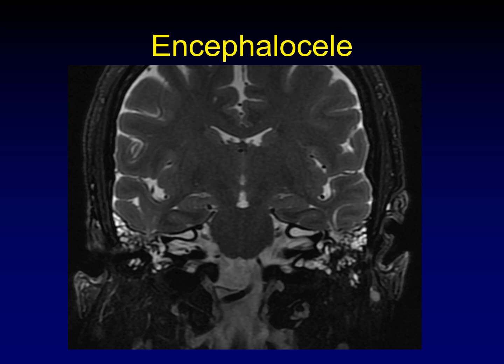For looking at an encephalocele through a tegman dehiscence, the key sequence is direct coronal T2s — not steady-state free precession sequences like FIESTA or CISS — direct coronal T2s. We don't routinely perform this but add it when encephalocele is suspected. Here's an encephalocele coming down through defects; you can see the dark cortex interrupted on MRI. Note the distortion of the overlying sulci — a super important clue that brain has herniated down, confirming this is an encephalocele, not just a meningocele.